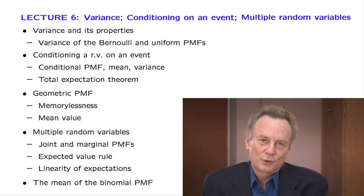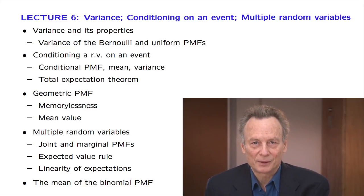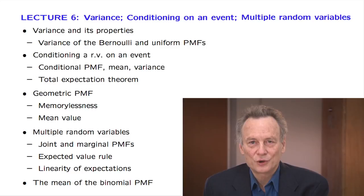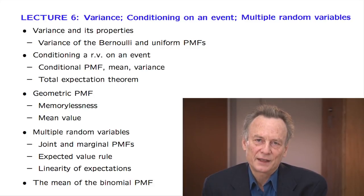In the last part, we show how to describe probabilistically the relation between multiple random variables. This is done through a so-called joint probability mass function. We take the occasion to generalize the expected value rule and establish a further linearity property of expectations. We finally illustrate the power of these tools through the calculation of the expectation of a binomial random variable.